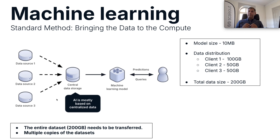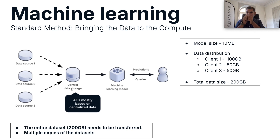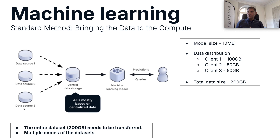In total, I need to transfer the full 200 GB from the sources to the central location. And if the clients also need to use that data set themselves, we end up with two copies of the data — one on the central storage for training, and one on each individual client side. That is the whole math based on the standard method. Let's see what changes federated machine learning brings to this process.